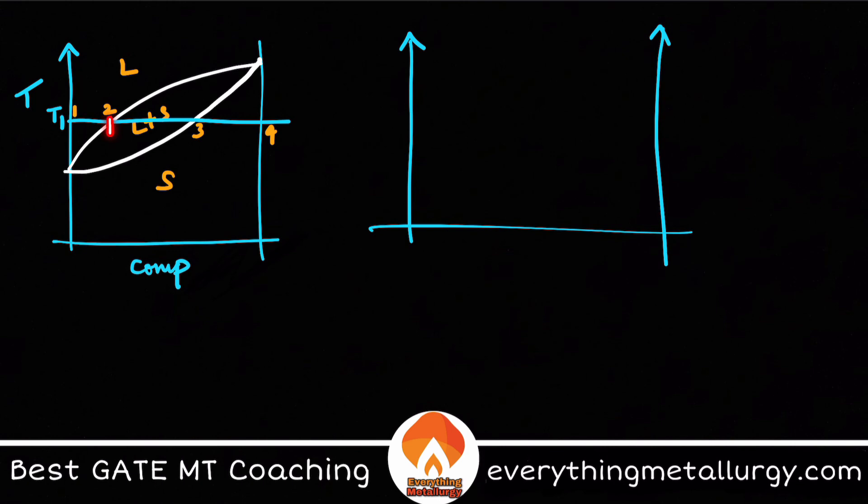Now if you consider this region between 2 and 3, in this particular region we find both the phases, liquid as well as solid. And similarly from 3 to 4 it is completely solid. So my curves will look like this - this is my liquid and this is my solid. So you can easily see here. Of course at equilibrium what we do, we just take a common tangent over here.